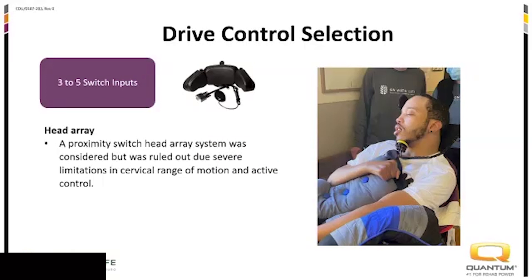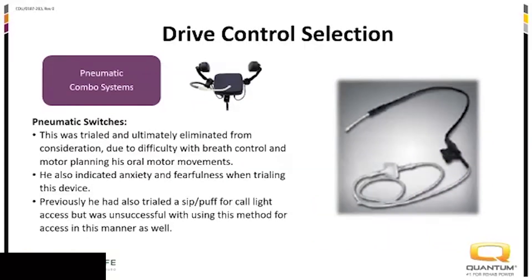Head array — he wasn't able to use one because he didn't have active or consistent head movement to control those switches. He wasn't able to use sip and puff either. We thought maybe this would be an option — he was trialing a sip and puff call light in his room while inpatient, using a blue tent call light underneath his chin to call for the nurse — but he just could not get the hang of it. He got really nervous while driving if he felt out of control, which was a big safety concern, so we had to make sure he felt comfortable.